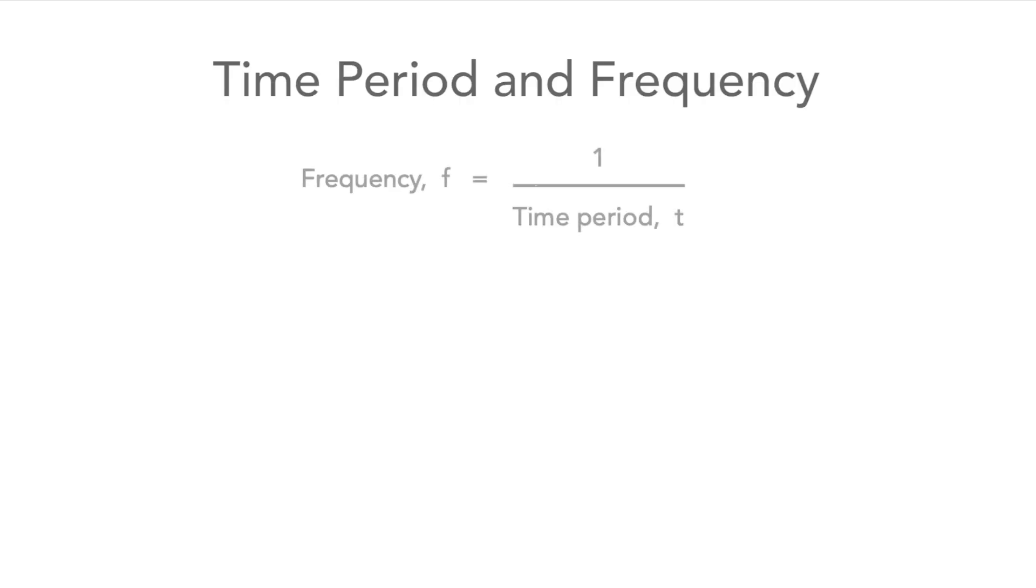The frequency is actually equal to one upon the time period. So if the square or rectangular wave has a time period of one millisecond or a thousandth of a second, then the frequency is one upon a thousandth, which is a thousand hertz or a kilohertz.